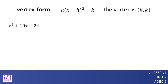A perfect square would be x squared plus 10x plus 25, so we need to add 1. Adding 1, however, would change the expression. To keep the new expression equivalent to the original one, we will need to add 1 and subtract 1.